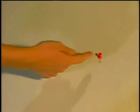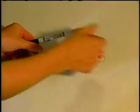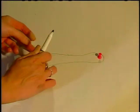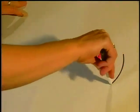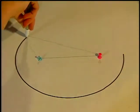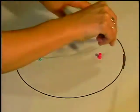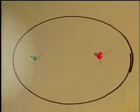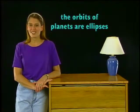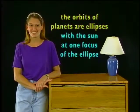When you draw an ellipse, you do it by putting down two thumbtacks. Then you encircle the two thumbtacks and a pencil with a length of string. Pull the string tight with the pencil and draw a line — there's your ellipse. Each thumbtack is one focus of your ellipse. With the orbits of planets, the Sun is at the center of one of these foci. The orbits of planets are ellipses with the Sun at one focus of the ellipse.